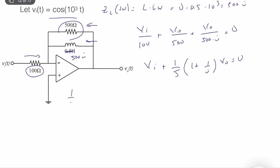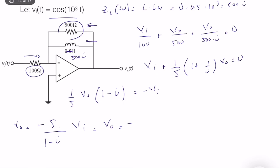So 1 over 5 times Vo times 1 minus j is equal to minus Vi. Therefore Vo is equal to minus 5 divided by 1 minus j, times Vi. We multiply the numerator and denominator by the complex conjugate, so Vo is equal to minus 5 times 1 plus j, divided by 2, times Vi.